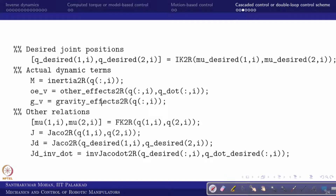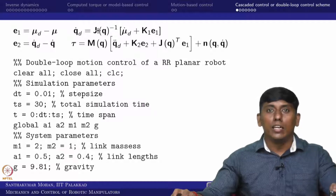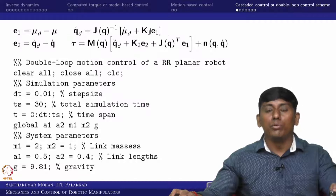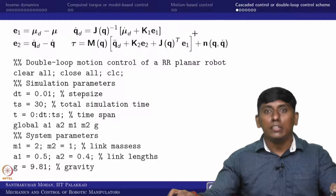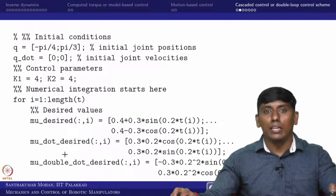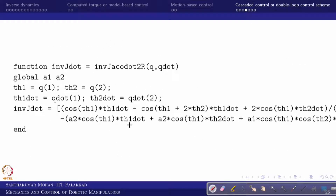We are taking the actual dynamic terms and also the other entities required — inverse Jacobian dot and Jacobian. We need inverse Jacobian dot because q_double_dot_desired equals J(q)_inverse times (mu_double_dot_desired plus k1*e1_dot) plus J_dot(q)_inverse times (mu_dot_desired plus k1*e1). So J_dot_inverse is required, which is why we add one additional sub-function. This is the inverse Jacobian dot function — we can see the full function in MATLAB.